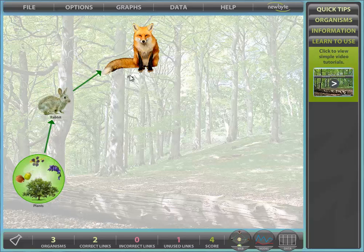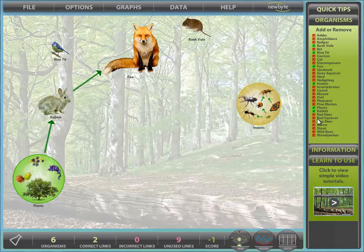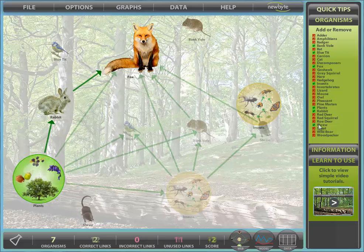We now have a complete FoodChain. Let's add some more organisms using the Organism panel to the right. We'll add bank vole, blue tit, insects, and shrew. Create a FoodWeb by linking in these new organisms.